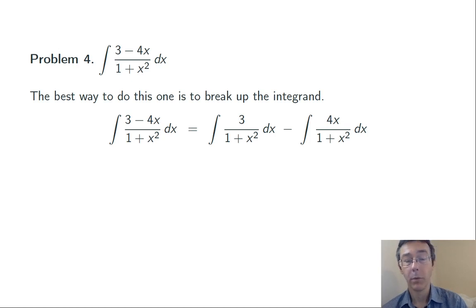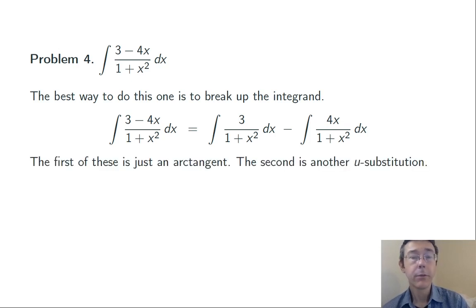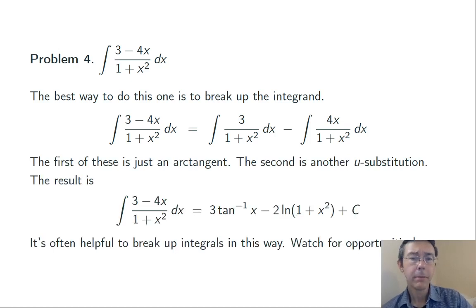Because the integral of 3 over 1 plus x squared is going to be quick. That's just an inverse tangent. And the integral of 4x over 1 plus x squared is going to be something we can do with a u substitution, u equal 1 plus x squared. We've already done three u substitutions in this video, so I'm not going to do every step on that last one. We end up getting 3 inverse tangent of x minus 2 times the natural log of 1 plus x squared plus c.